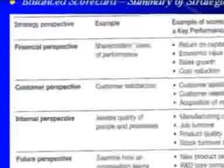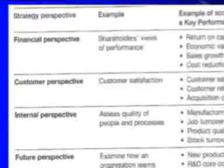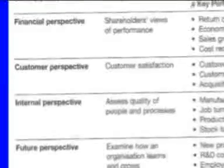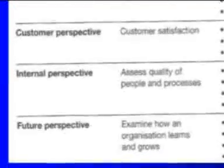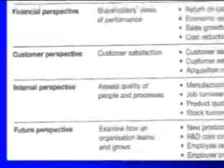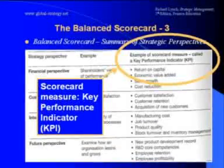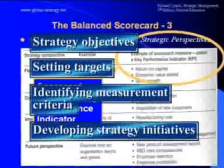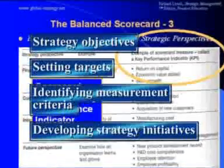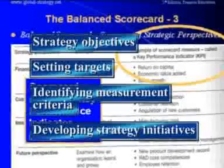The four strategy perspectives that appear on every scorecard are: one, financial; two, customer; three, internal; and four, future. These are translated into four steps: strategy objectives, setting targets, identifying measurement criteria, and developing strategy initiatives. The targets are summarised as key performance indicators.